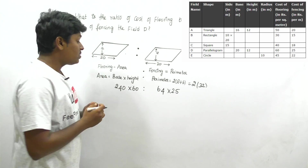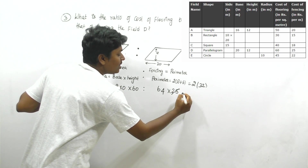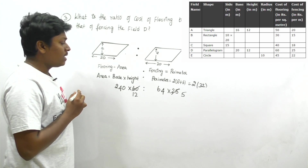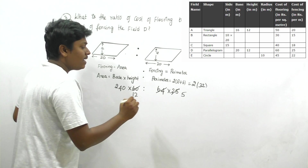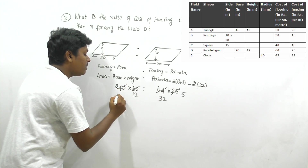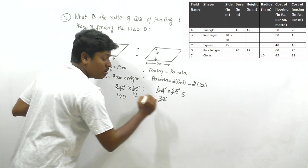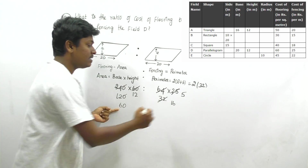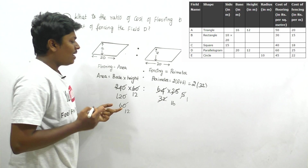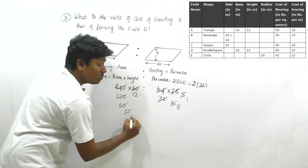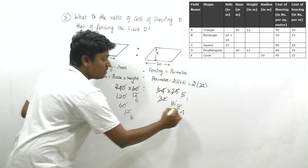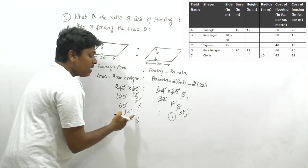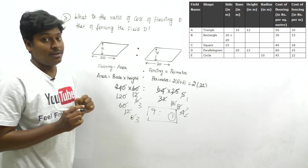Now cancel the values: for flooring we have 240 × 60, for fencing we have 64 × 25. Cancelling by 5: 25 becomes 5 and 240 becomes 48. Then cancelling repeatedly by 2: progressively reduce 48 and 64. After full cancellation the entire denominator reduces to 1 and numerator to 9, giving the ratio 9:1.